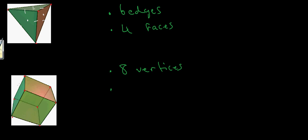How many edges do we have? We've got one, two, three, four along the top; one, two, three, four along the bottom; and one, two, three, four around the sides going upwards or downwards — so 12 edges. And finally, how many square faces do we have? How many sides does a six-sided die have? Six — so that's a total of six faces.